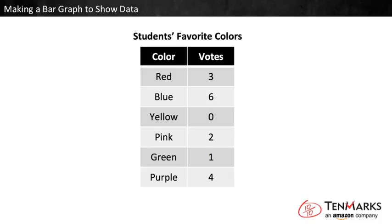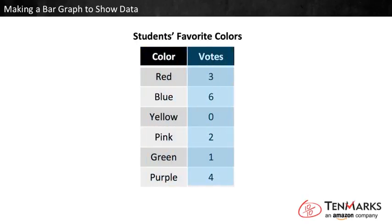Some students voted on their favorite colors, and the data is shown in the table. The first column tells their color choices — these are the categories. The second column tells the number of votes for each color.